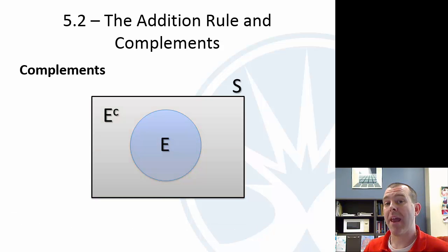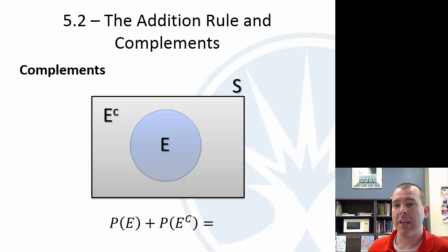So one question we might have, then, is how does that play a role in probability? Well, hopefully you can see that if I'm looking at the probability of E, plus the probability of its complement, that's everything. So if I add the two together, I should get one.